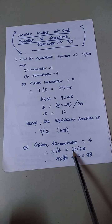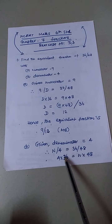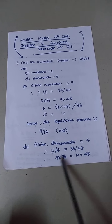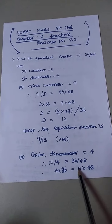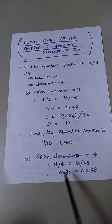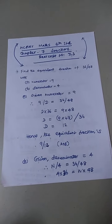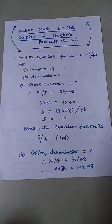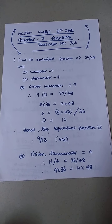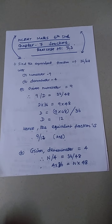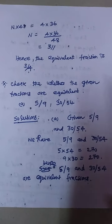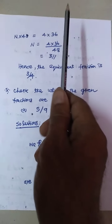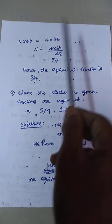Setting up the cross-multiplication: 4 into 36 equals N into 48. So N into 48 is equal to 4 into 36. That gives us the equation to solve for N.